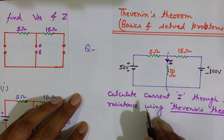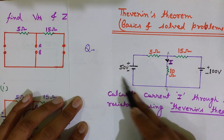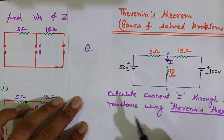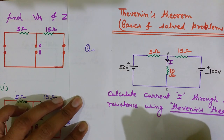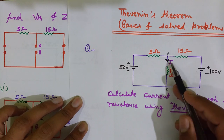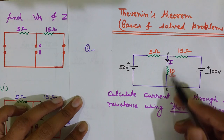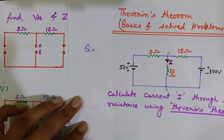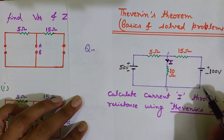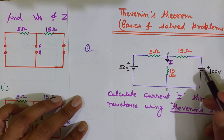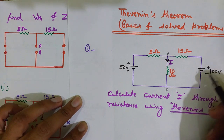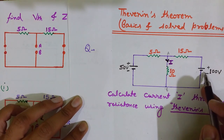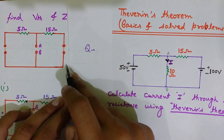To calculate RTH, we replace any voltage source present in the network by a short circuit. Here you can see the 50 volt and 100 volt sources have been replaced by a short circuit. We are finding RTH with respect to terminals AB — the branch through which we want to calculate the current. If there were any current sources, we would replace those by open circuits. Here we have only two voltage sources with no internal resistance, so they are replaced by short circuits.